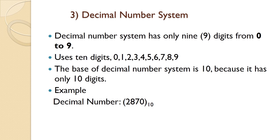Decimal number system has ten digits from 0 to 9 — that is 0, 1, 2, 3, 4, 5, 6, 7, 8, and 9. Its base is 10 because it has only 10 digits. An example is given below.